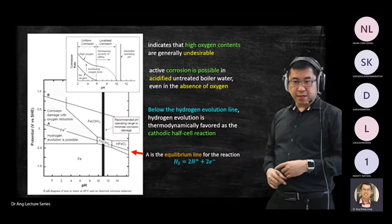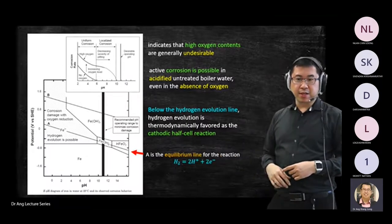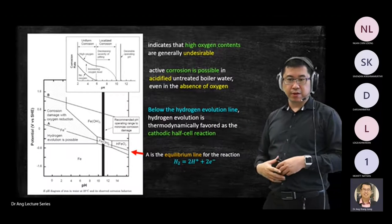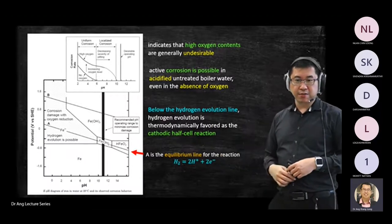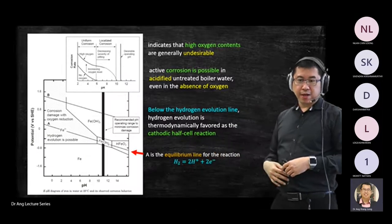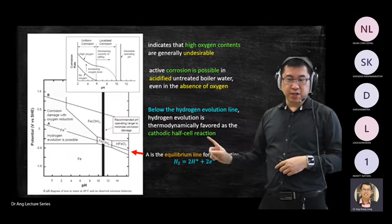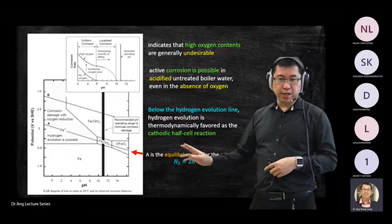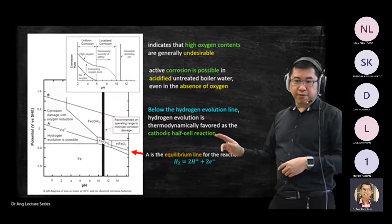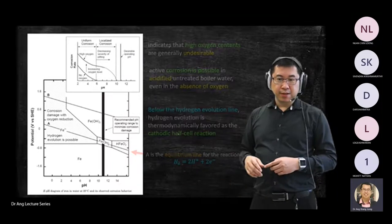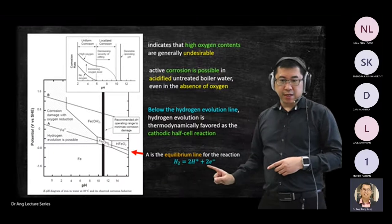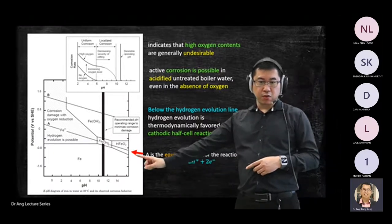Please go and read Appendix D. We will cover more of this in the next lecture — we have a specific lecture on the kinetics of corrosion. At the moment, I'm introducing a new term: cathodic half-cell reaction. I'll brief you in detail later, but those below line A will have a cathodic half-cell reaction where you have positive and negative charges.